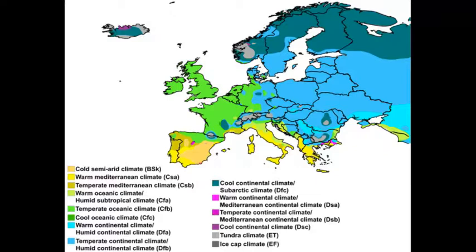Next up are C climates — we see two different types. Just like in North America where we saw the Mediterranean climate in Southern California and then the marine west coast climate poleward to the north, we see that same pattern here. To the south we find the Mediterranean climate, and to the north the marine west coast climate. The yellows and golds we see in Greece, Albania, Italy, southern France, and a good amount of the Iberian Peninsula are Mediterranean climate regions.